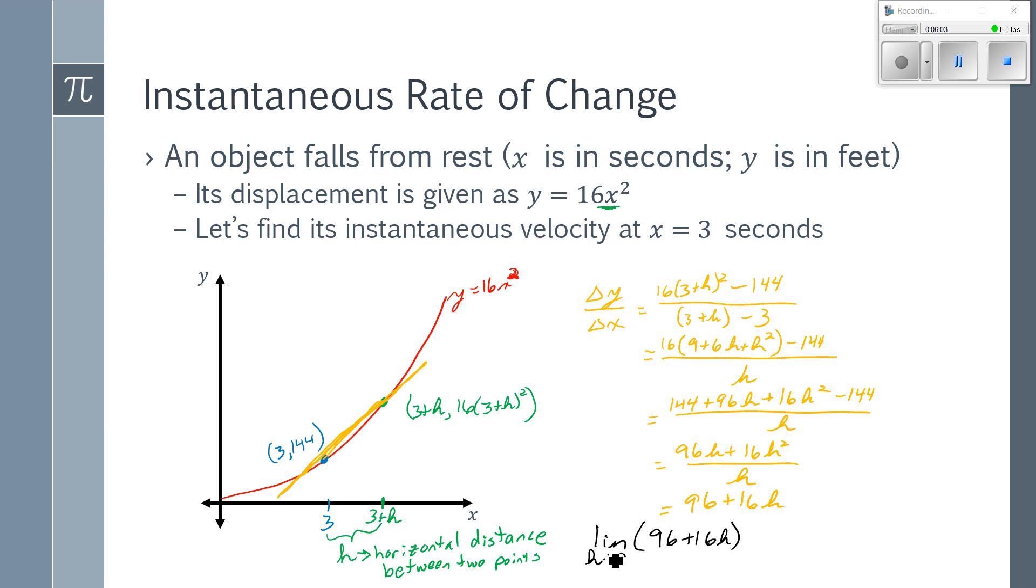Well, if I do the limit as h approaches zero, what that's saying is I'm moving this green point until it is so close to the blue one that I can't actually measure how close they are. They're so close. They get close enough that we're saying, you know what, they're close enough that we treat them like they're just one point instead of two. Well, this is a limit I can evaluate by substitution by plugging zero in for h. And I get 96.